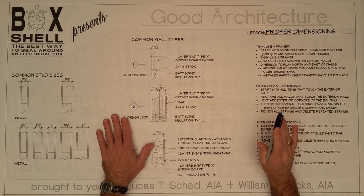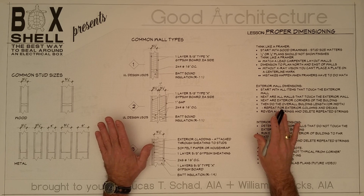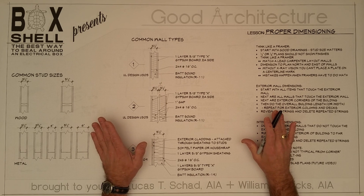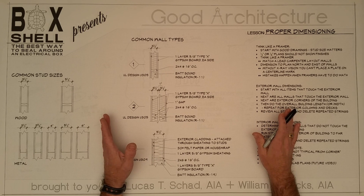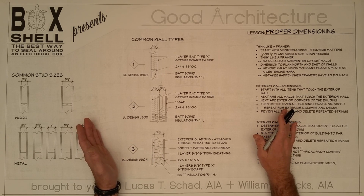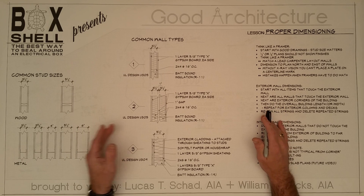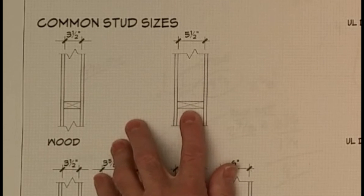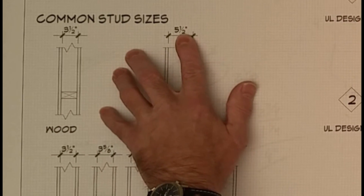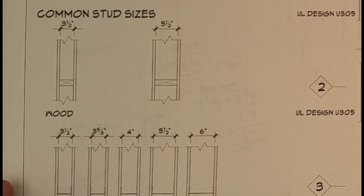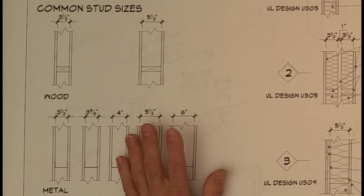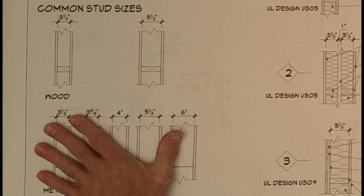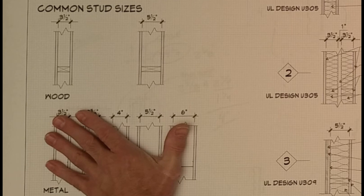Good drawings mean that stud size matters. Common stud sizes used in most residential and light commercial construction, if made from wood, are two-by-fours and two-by-sixes. The actual — or nominal — dimension is an inch and a half by three and a half inches, or an inch and a half by five and a half inches. Metal studs vary in many sizes: three and a half, three and five-eighths, four inches, five and a half, and six inches. But today we're going to focus on wood studs.